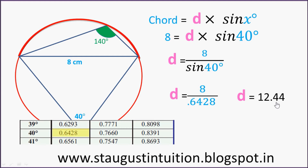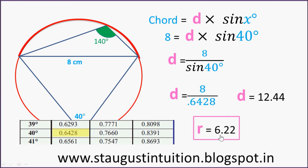D is equal to 12.44. Clear? So, diameter divided by 2 is equal to radius.